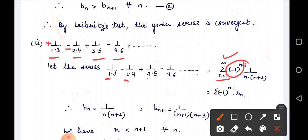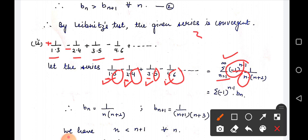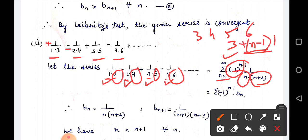So bn = 1/(n(n+2)) and bn+1 = 1/((n+1)(n+3)). Now, n < n+1 and n+2 < n+3 for all n. Multiplying both: n(n+2) < (n+1)(n+3) for all n ≥ 1. Reciprocating: 1/(n(n+2)) > 1/((n+1)(n+3)), i.e., bn > bn+1 for all n. So the first condition is satisfied — the series is decreasing.